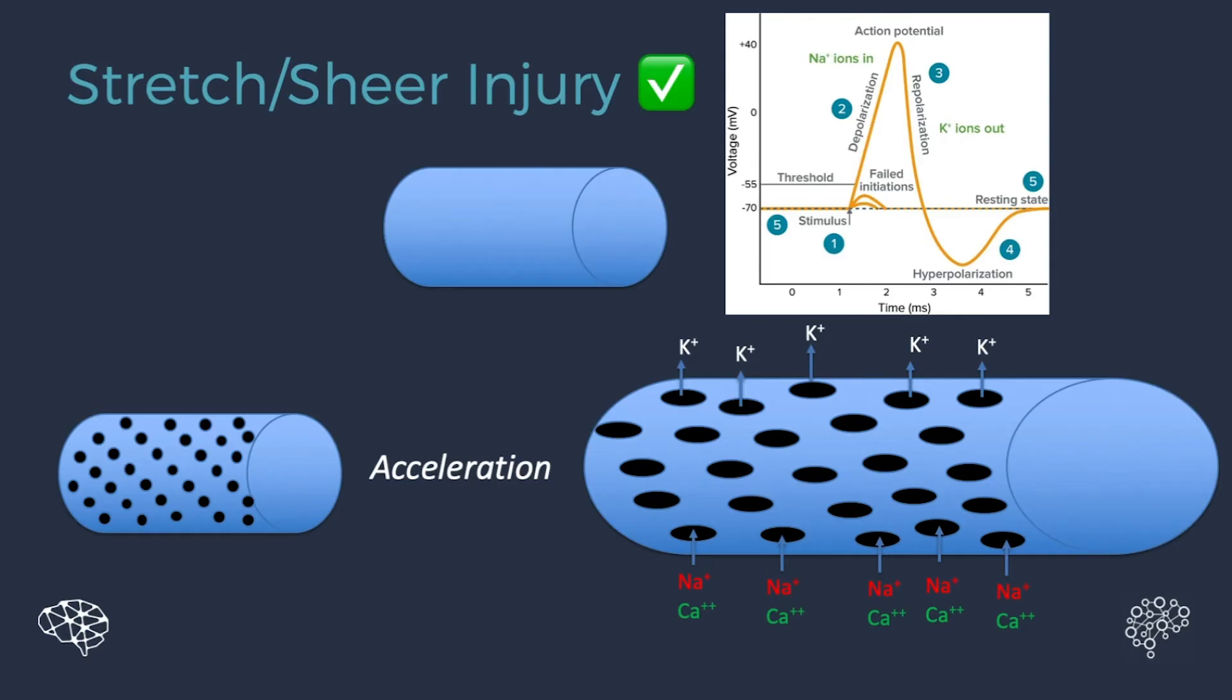And you'll get an ion exchange. So all a concussion is, is millions and millions of brain cells that get tricked into thinking that they've all received an action potential at the same time because of this stretching and ion exchange.